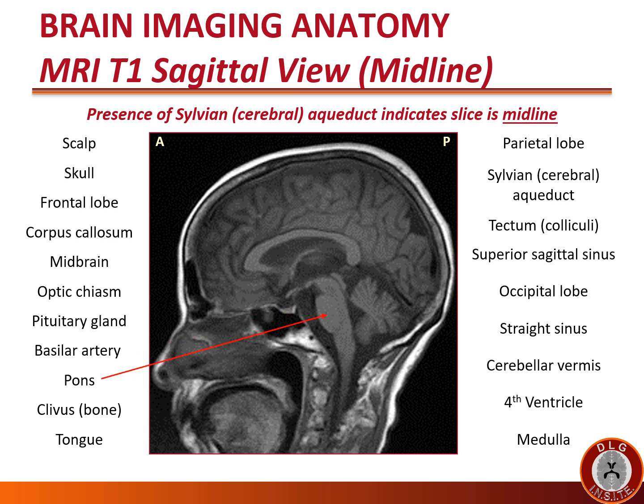The middle part of the brainstem is called the pons, which literally means 'bridge' — bridging the lower medulla to the upper midbrain. The clivus is the bony slide anterior to the basilar artery and pons, extending up from the vertebrae and forming a canal where the brainstem and cerebellum sit. Rostrally, the clivus extends up to form the sella turcica, where the pituitary gland sits.